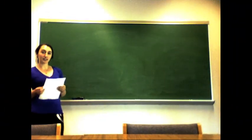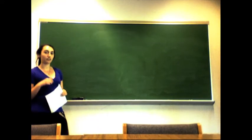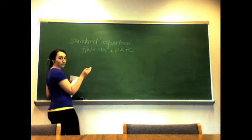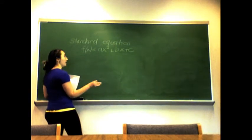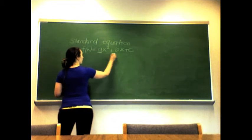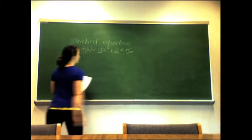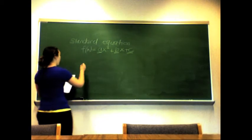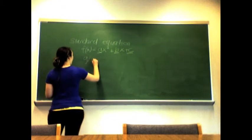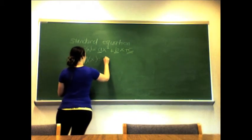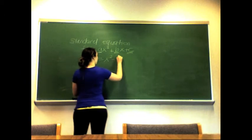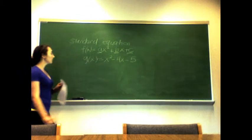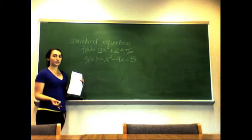I'm going to be showing you guys about standard equations and how to sketch the graph. We're going to start with a simple example, but first we have to make sure that the equation is in standard form before we can start anything. Our question is going to be g(x) = x² − 4x − 5, which is already in standard form for us.